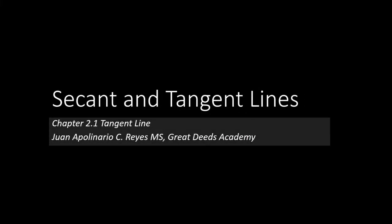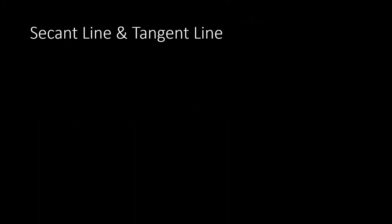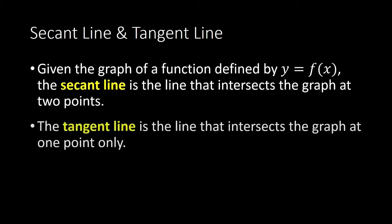Secant and Tangent Lines. Given the graph of a function defined by y is equal to f of x, the secant line is the line that intersects the graph at two points. The tangent line is the line that intersects the graph at one point only.